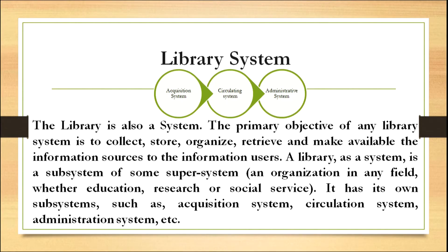The primary objective of any library system is to collect, store, organize, retrieve and make available the information sources to information users. A library as a system is a subsystem of some super system like an organization in any field — whether education, research or social services — and it has its own subsystems such as acquisition system, circulation system, administration system, etc.